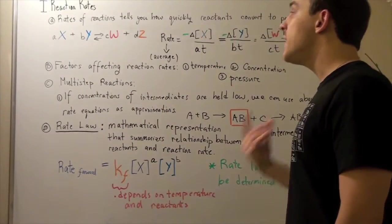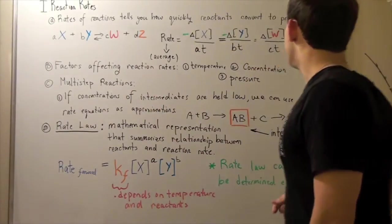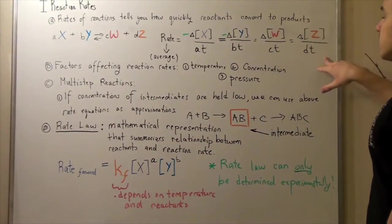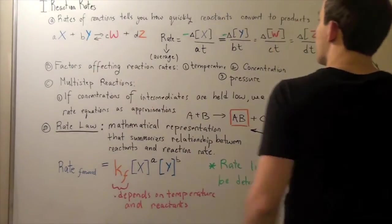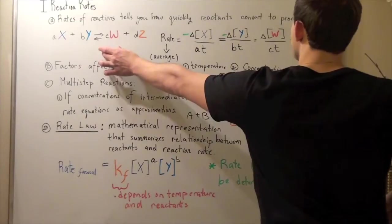The rate of appearance of W and Z can be given by these formulas, where now we have the positive, because these guys are appearing. And so these guys will both be positives.